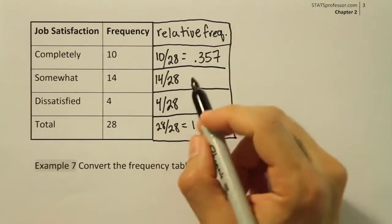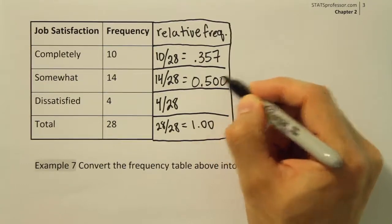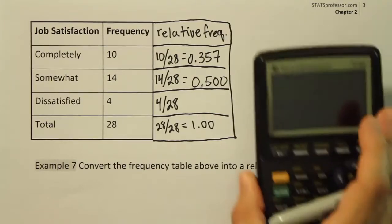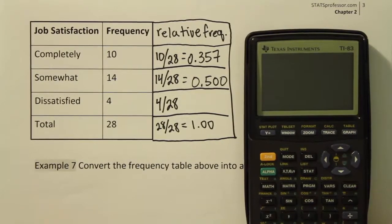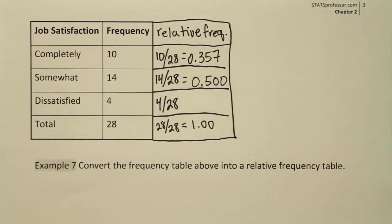And 14 divided by 28 is going to give us 0.500, right? Because 14 is half of 28. And then we'll do 4 28ths, which is 1 7th, so we'll do 4 divided by 28, and we should get about 14% for that. Sure enough, we get 0.143 roughly.